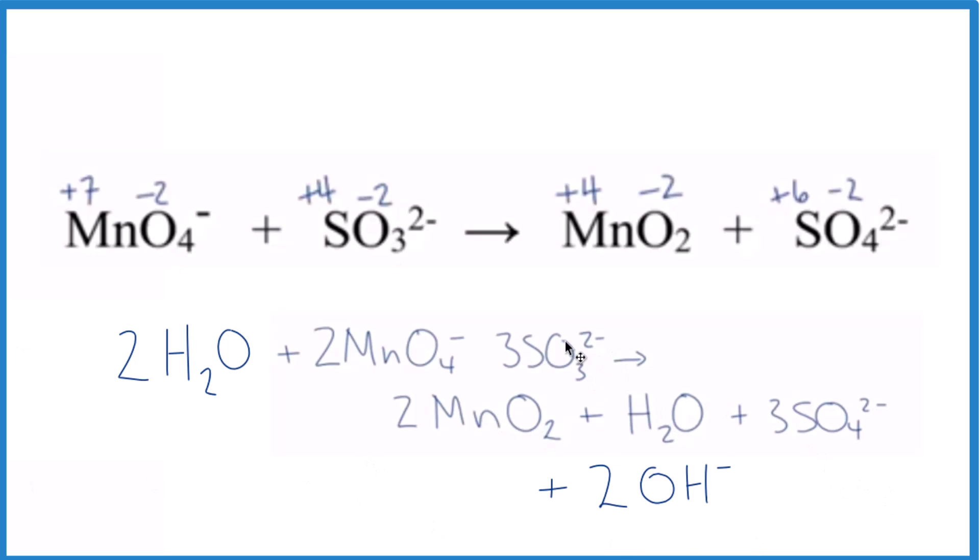If you count all the atoms up on each side, each type of atom is the same. If you look at the charge, it works out to be the same on both sides. Everything's balanced. And because we have this hydroxide here, this OH minus, two of them here, this is in basic medium.